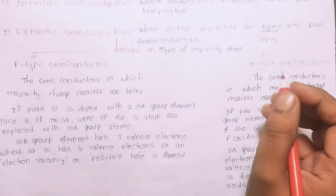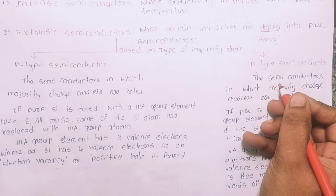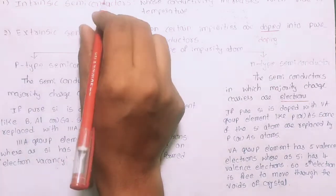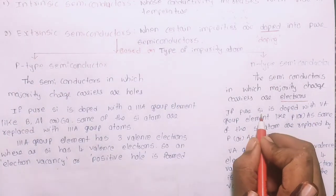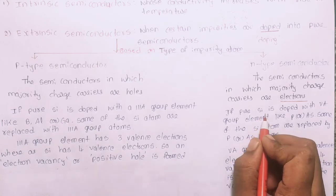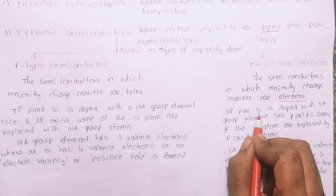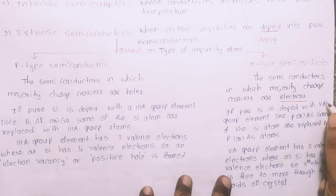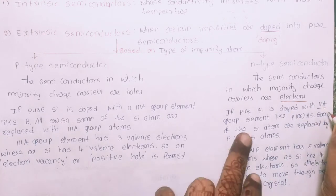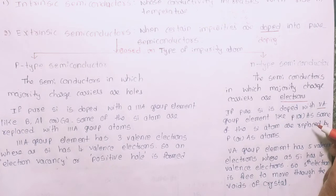For N-type semiconductors, we start with a pure intrinsic semiconductor — silicon or germanium — and add a fifth group (pentavalent) impurity. The fifth group elements we use are phosphorus, antimony, and arsenic.